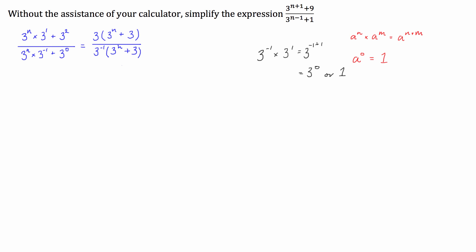In the numerator we've got a factor of 3 and a 3 to the n plus 3 term. In the denominator we've got 3 to the negative 1 and a 3 to the n plus 3 term. These two share a common factor of 3 to the n plus 3, which will cancel out because a number divided by itself equals 1. So what we're left with is 3 to the power of 1 over 3 to the power of negative 1.